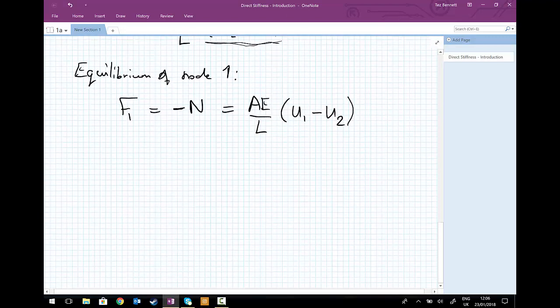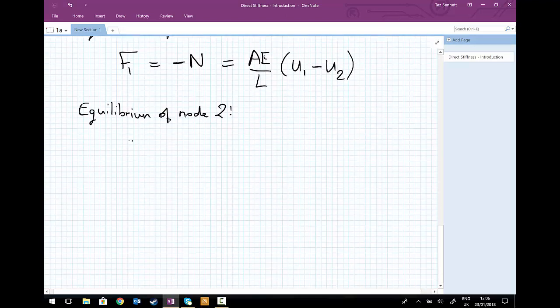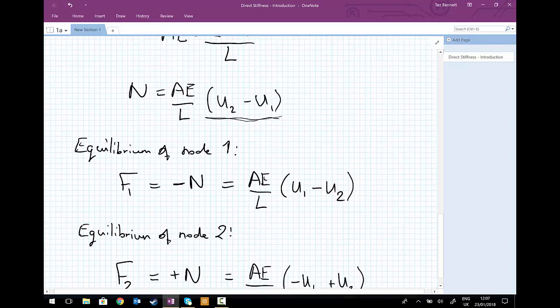And I'm going to do similar for the equilibrium of node two. So in this case, we had the external force F2 was equal to plus N. So going in the positive X direction. And again, we're going to write it in a similar format to what we did for above. And we have AE divided by L brackets. And we're going to slightly different. We're going to keep the minus sign there, but we've got minus U1 plus U2. So we've got the U1 at the front. That's the only thing I've done slightly different from the equation we wrote here.